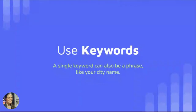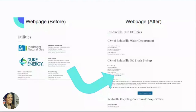Let's talk a little bit about keywords first. With search engine optimization, a keyword can actually be a phrase — like your city name. So 'Myrtle Beach' can be a single keyword, just like 'Myrtle' can be a keyword, 'Beach' can be a keyword, and 'Myrtle Beach, South Carolina' can be a single keyword. One way we can improve SEO is to just use that keyword more.